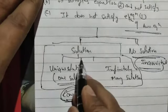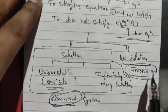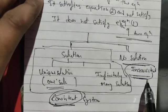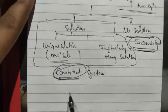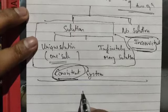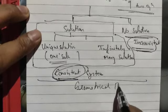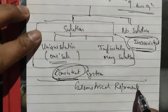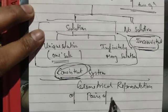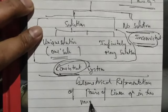A consistent system has a solution — it may be unique or it may have infinitely many solutions. An inconsistent system has no solution. Now we are going to proceed to its graphical or geometrical representation. Our main focus now is geometrical representation of pairs of linear equations in two variables.